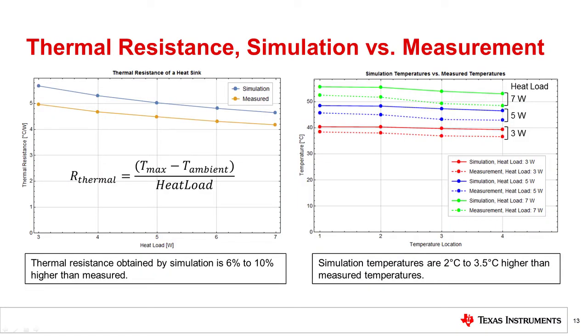Thermal resistance is calculated as maximum temperature difference divided by the heat load. Results obtained by the simulation are 6 to 10 percent higher than the measured values, which we consider to be a good match. Simulation shows 2 to 3.5 degrees Celsius higher temperatures when compared to measurement. Simulation error is in conservative direction, which is a good thing and makes our margin that much larger.